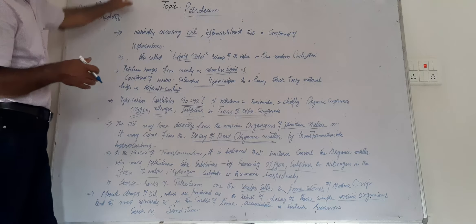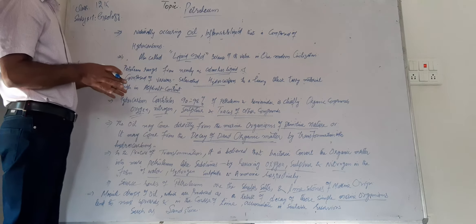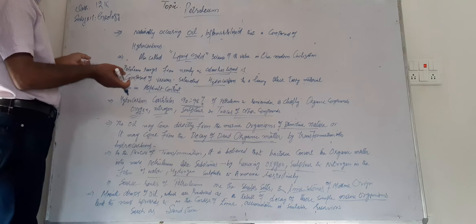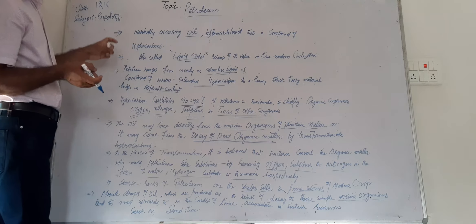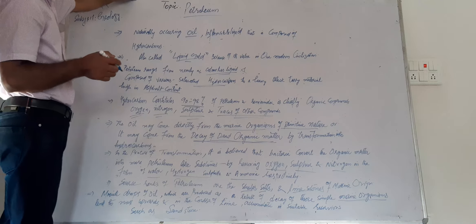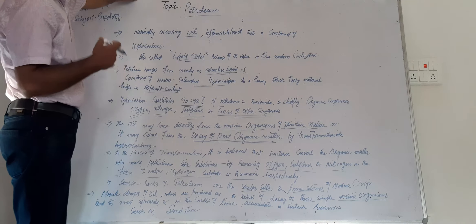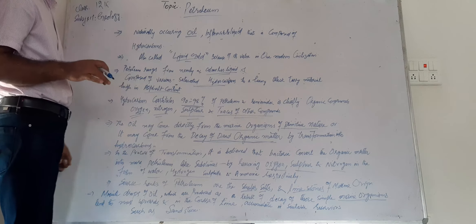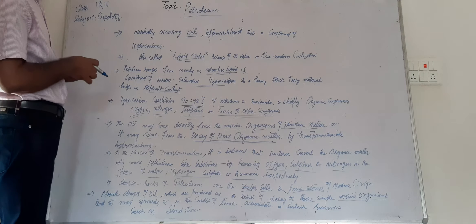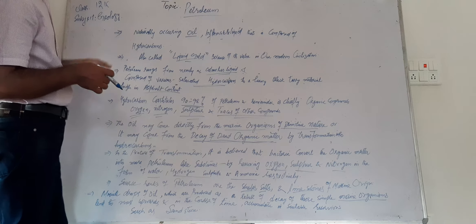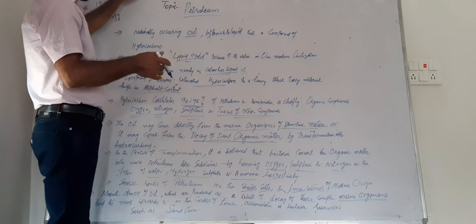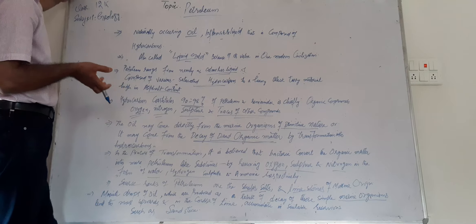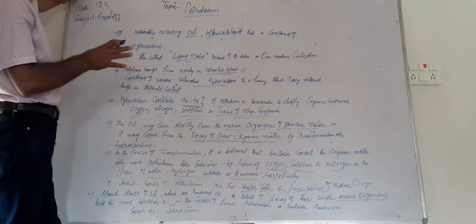In the process of transformation, it is believed that bacteria converts this organic matter into more petroleum-like substances by removing oxygen, sulfur, and nitrogen in the form of water, hydrogen sulfide, and ammonia. So oxygen is changed into water, sulfur into hydrogen sulfide, and nitrogen is changed into ammonia.